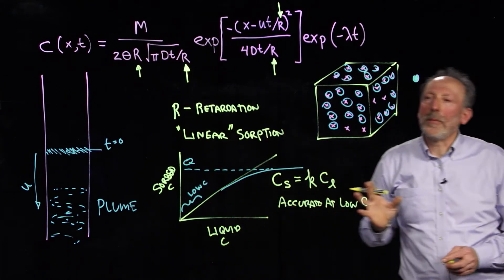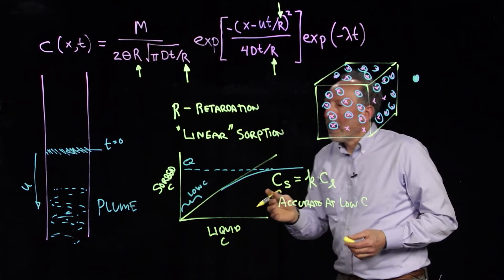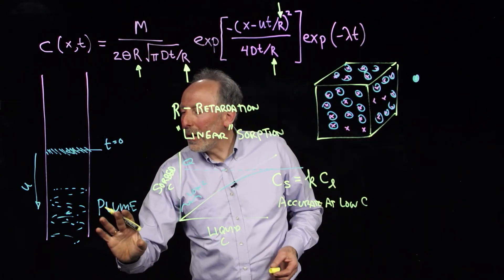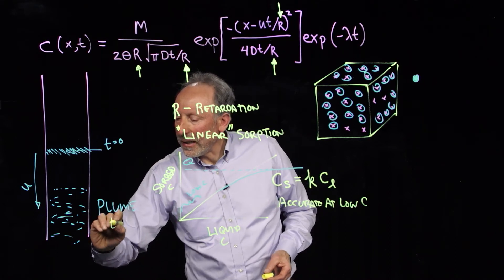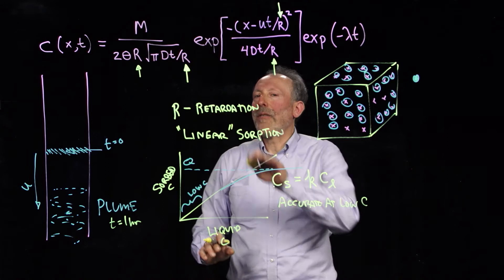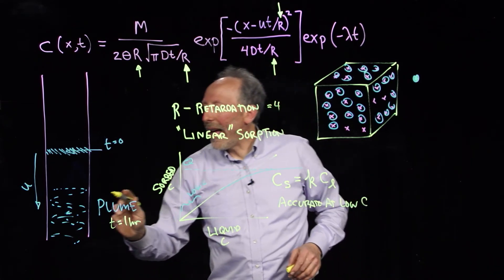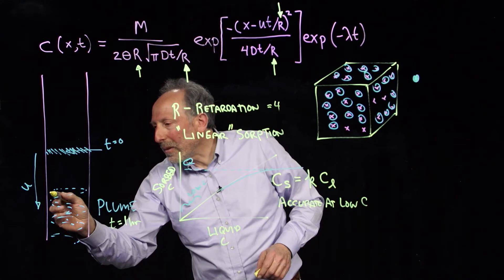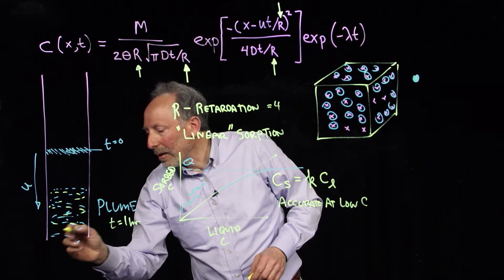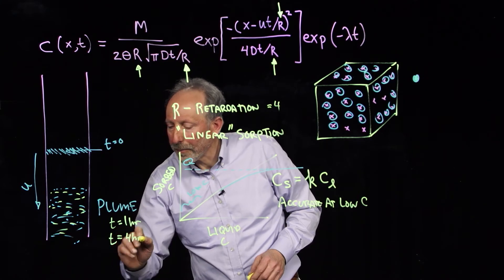So, all of the time is adjusted by the retardation factor, which means that for the plume, if with no retardation, the plume took T equals, let's say, one hour to get here. And if the retardation factor were equal to four, then for the retarded plume to get to the exact same place would take T equals four hours.